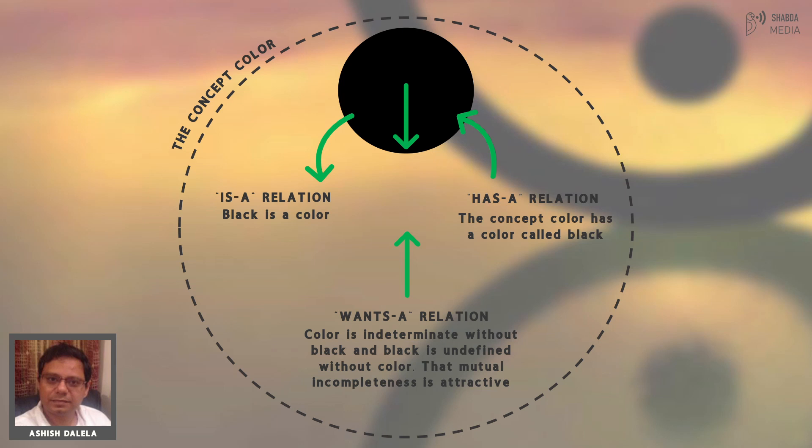One way to understand this white inside black is to think of the concept of color, which is both imminent and transcendent to white and black. It is transcendent because there are other colors beyond white and black. It is also imminent because white and black are colors. So when you see the two colors, there is a sense in which the property of color is present in white and black. And yet, it is not exhausted by white and black.